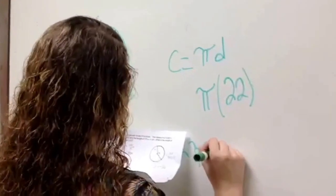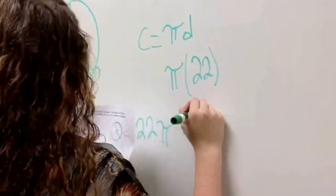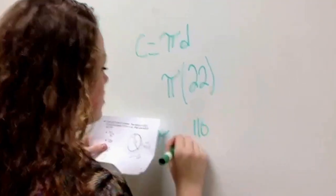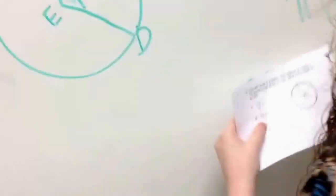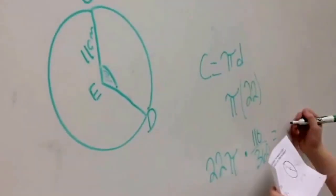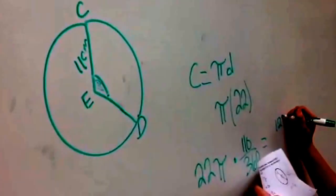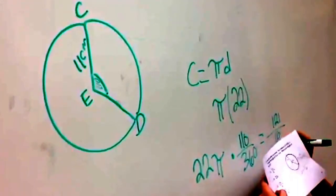And then you multiply that by 12 over 32, and that equals 21 over 18 pi.